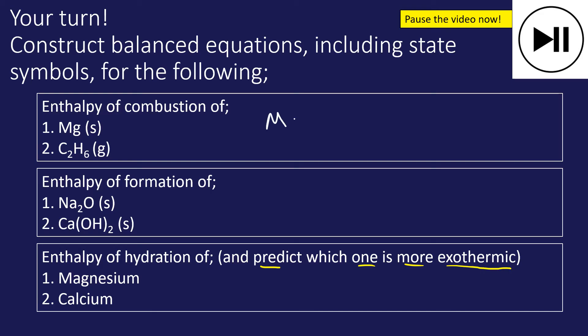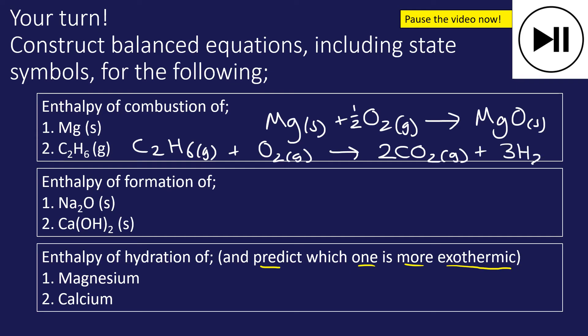First one, magnesium solid with oxygen because this is combustion. This will form MgO solid. Balance, I need half O2. C2H6 gas reacting with oxygen gas. Complete combustion would form 2CO2 and 3H2O. Balance, we need three and a half O2. So fractions are needed here.